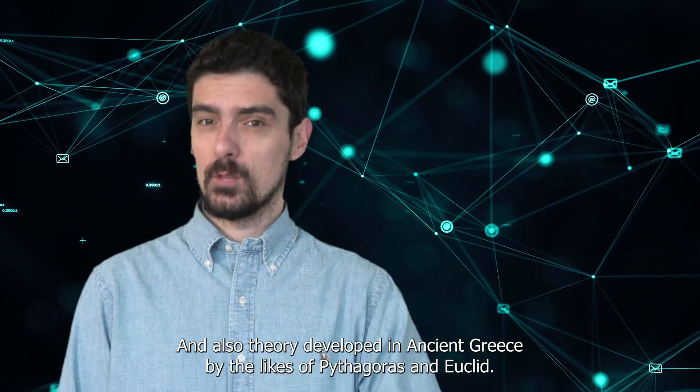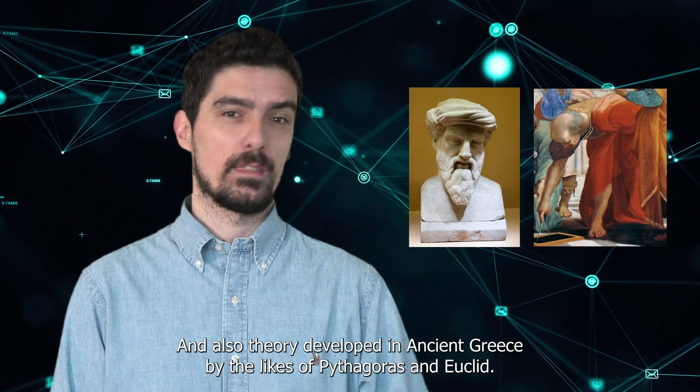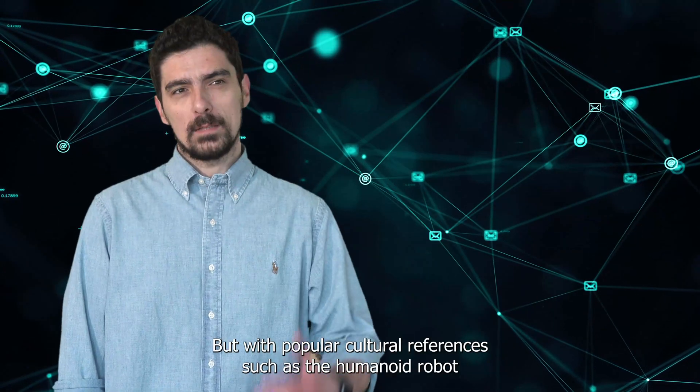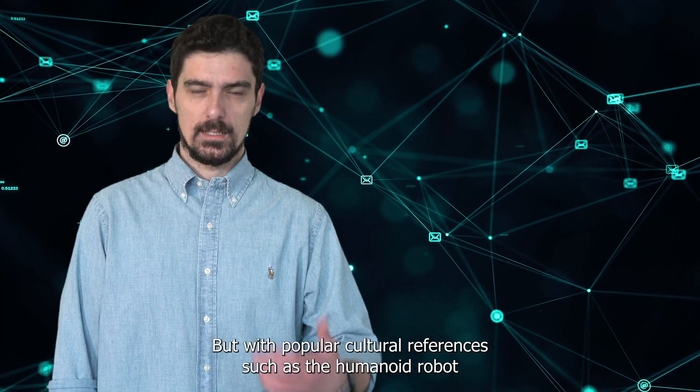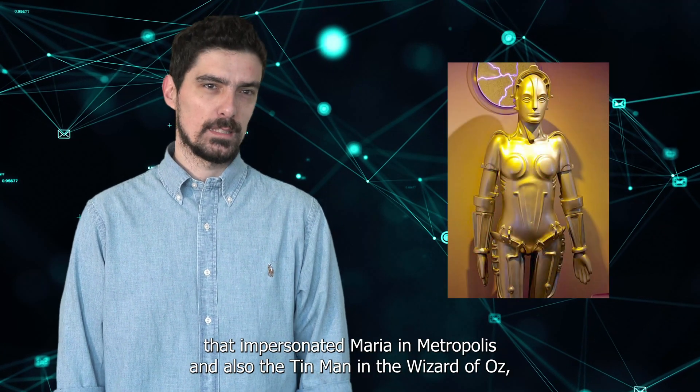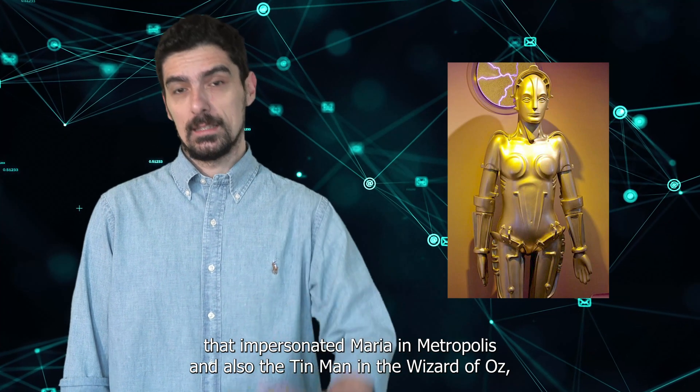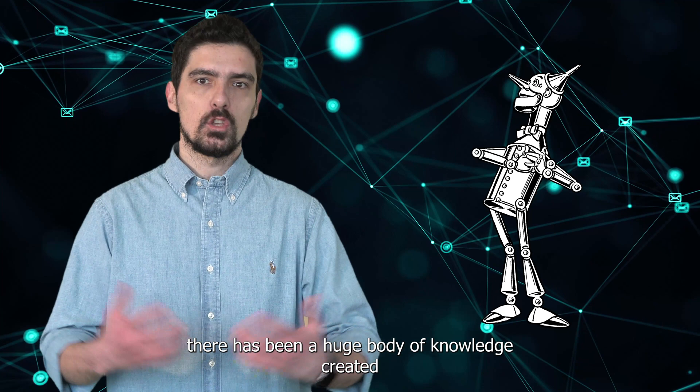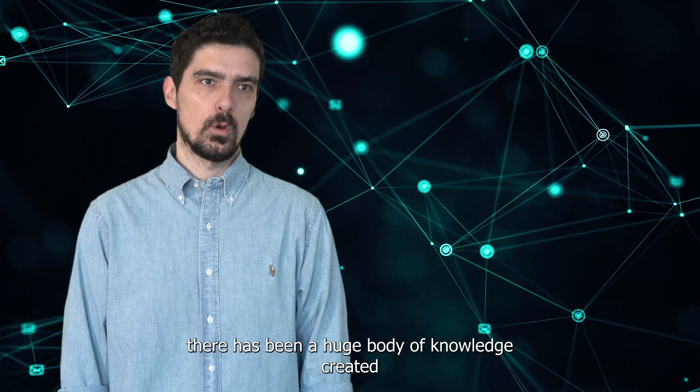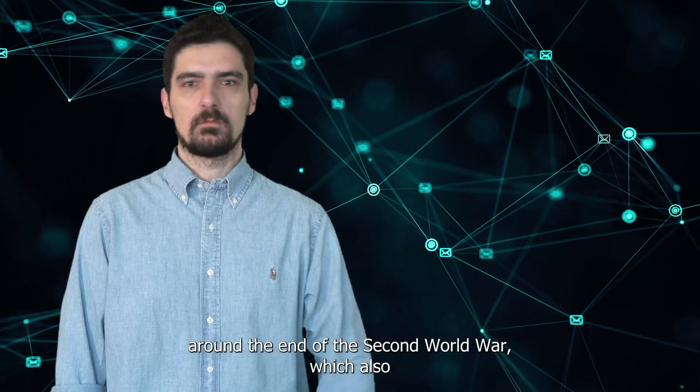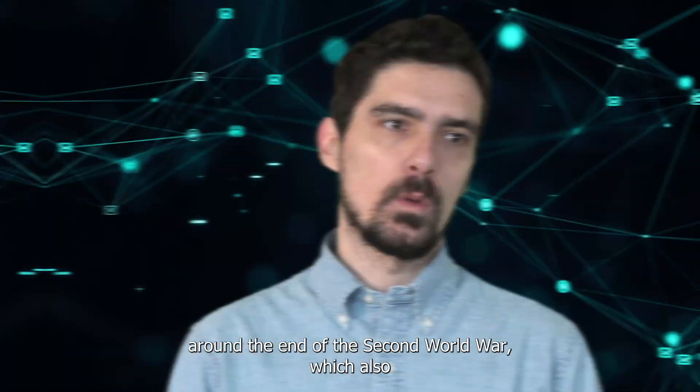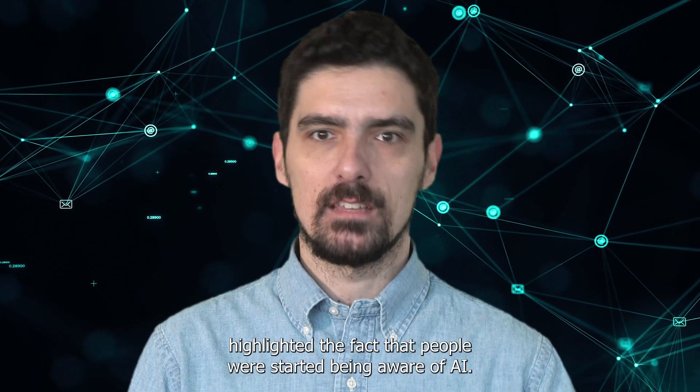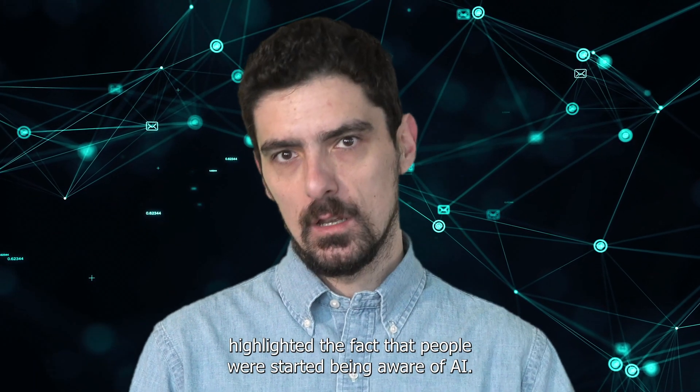Also theory developed in ancient Greece by the likes of Pythagoras and Euclid. But with popular cultural references such as the humanoid robot that impersonated Maria in Metropolis and the Tin Man in The Wizard of Oz, there has been a huge body of knowledge created around the end of the Second World War, which also highlighted the fact that people started being aware of AI.